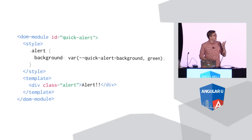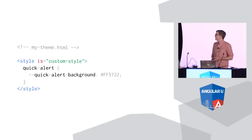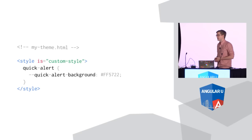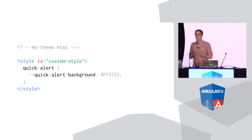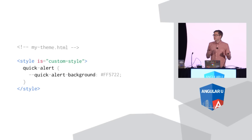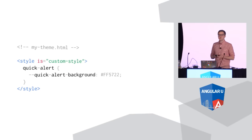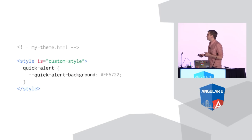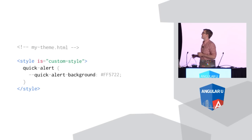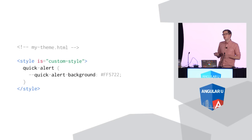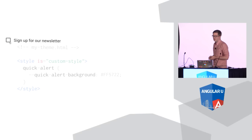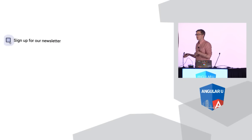For someone to actually target this thing, they're going to need to use a fancy little element we created called custom-style. CSS custom properties are shipping in Firefox, but not in other browsers yet. With this custom-style element, we've shimmed support for custom properties in all the different browsers. You add your styles to custom-style, target quick-alert, target that quick-alert-background custom property, and pass in your own color value. So now we get an orange banner instead of a green one.